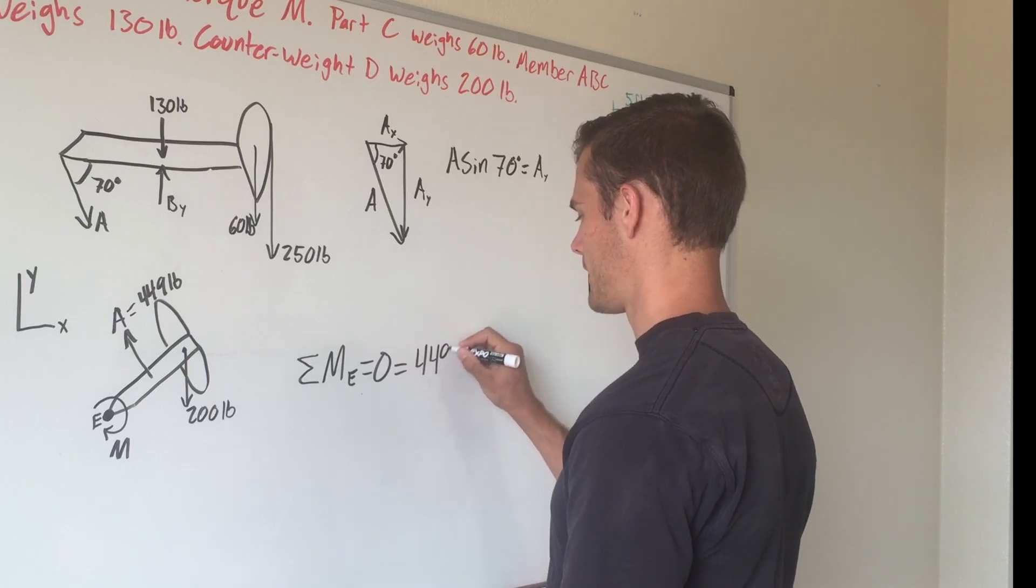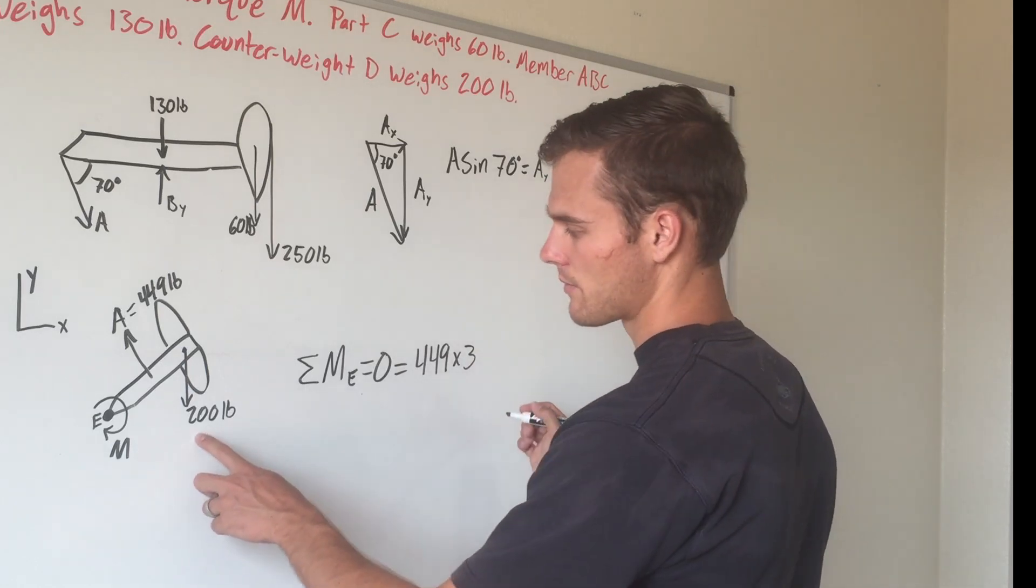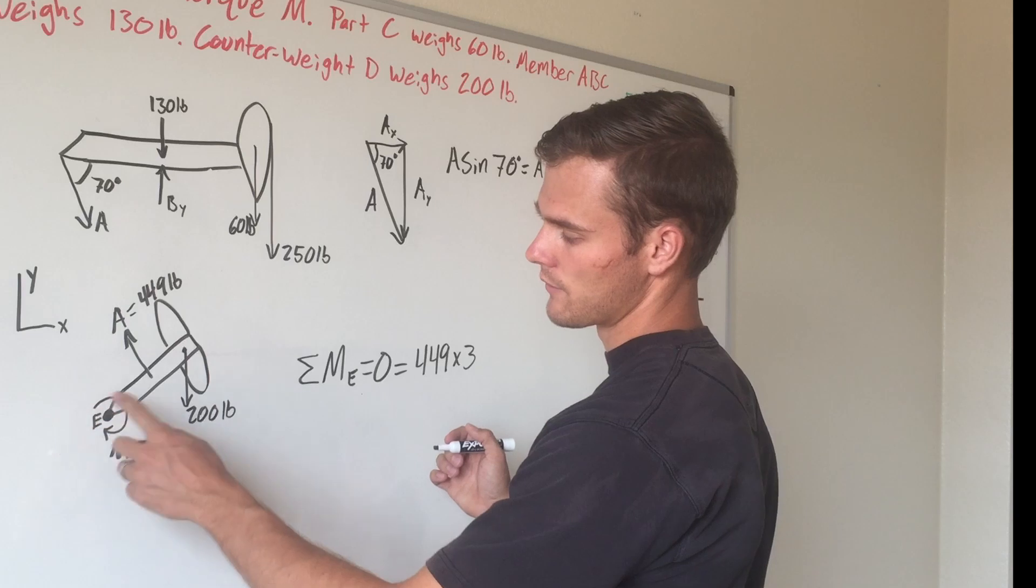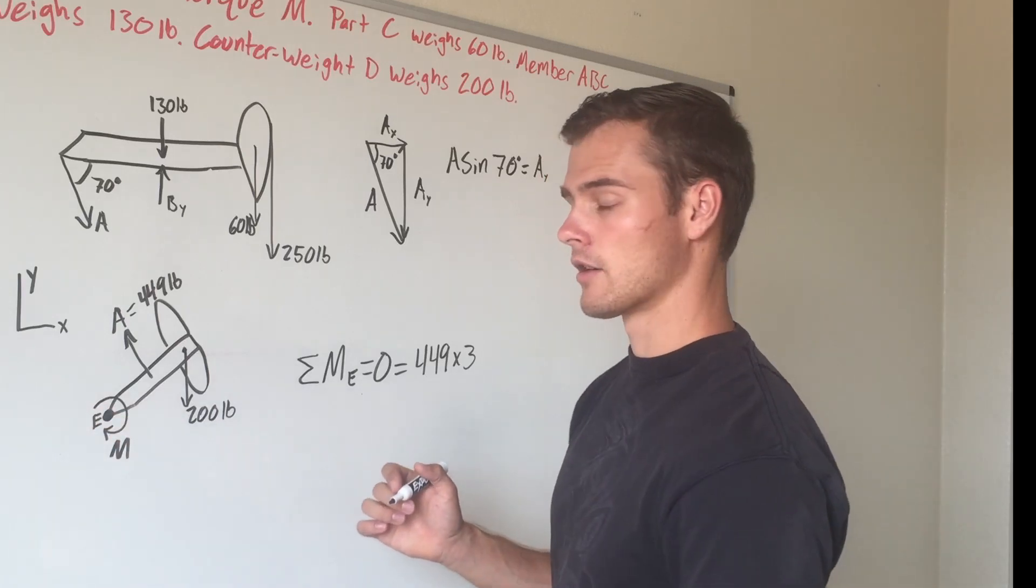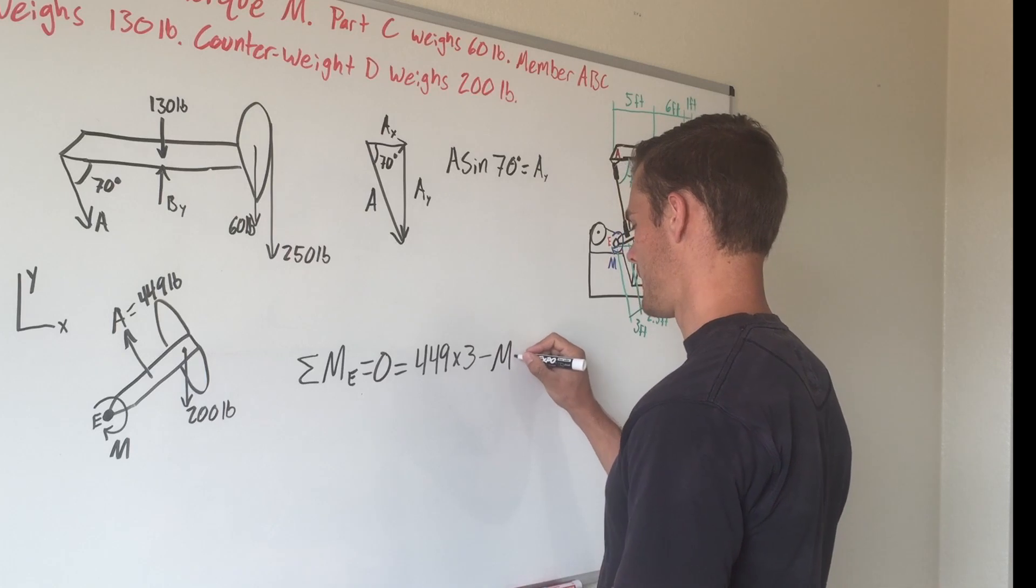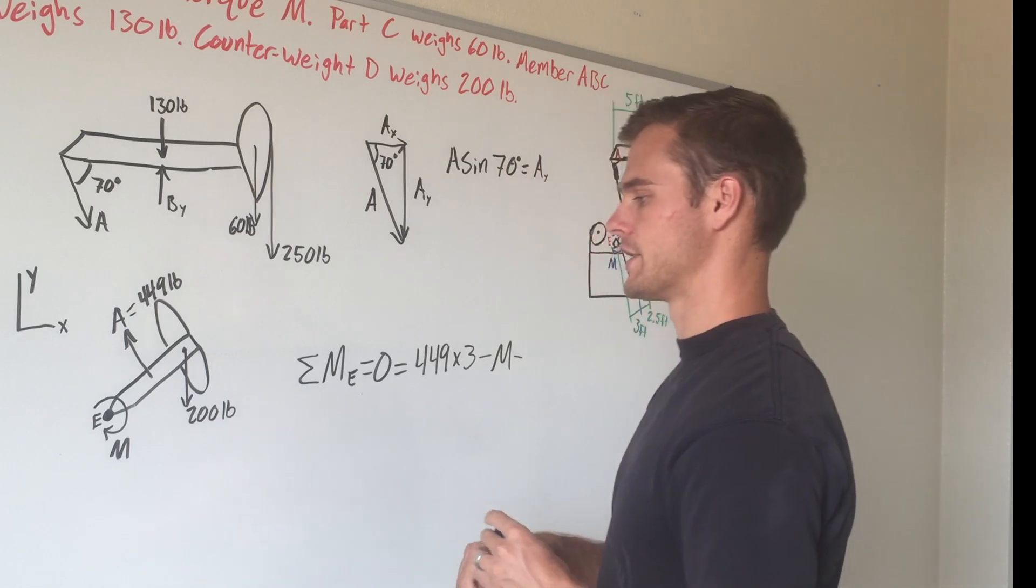So 449 multiplied by 3. Then you have your 200-pound force and your M. We've drawn M going in the clockwise direction, so we'll say it's negative, so minus M. Then your 200-pound force is also going to cause clockwise rotation.